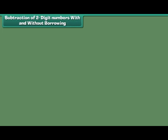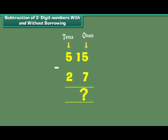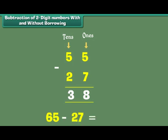Subtraction of two-digit numbers with and without borrowing. Let us now subtract two-digit numbers using the technique of borrowing. What is 65 minus 27? Since 5 is less than 7, it borrows 1 from the number at the 10s place to make itself 15, which is larger than 7. 15 minus 7 is equal to 8. Since the 6 at the 10s place lent 1, it becomes 5. 5 minus 2 is equal to 3. Therefore, 65 minus 27 is equal to 38.